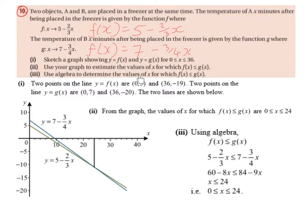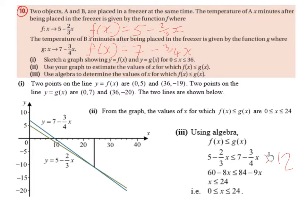Part 3: use algebra to determine the values of x for which f of x is less than or equal to g of x. We let f of x be less than or equal to g of x, substituting to get 5 minus 2 over 3x is less than or equal to 7 minus 3 over 4x. To eliminate the fractions, we multiply across by 12, since 12 is the common denominator of 3 and 4. This gives 60 minus 8x is less than or equal to 84 minus 9x.